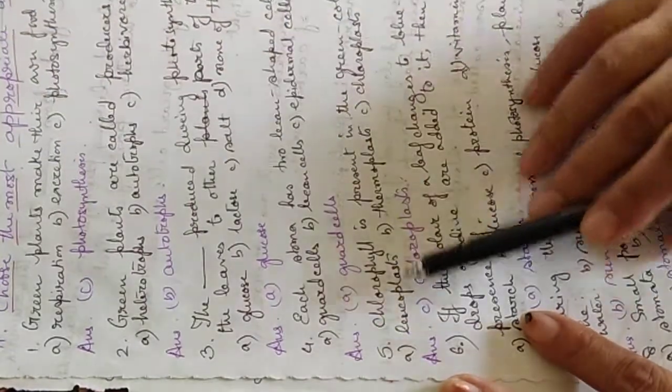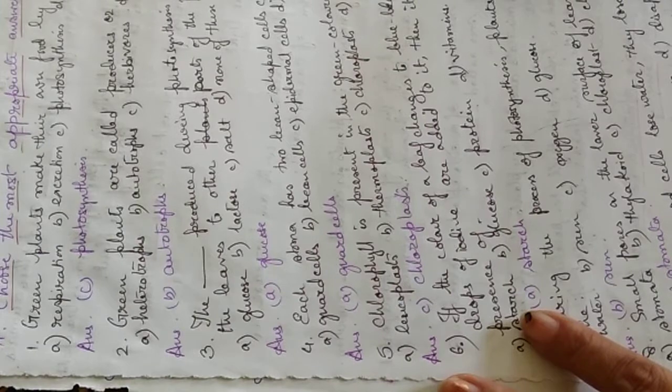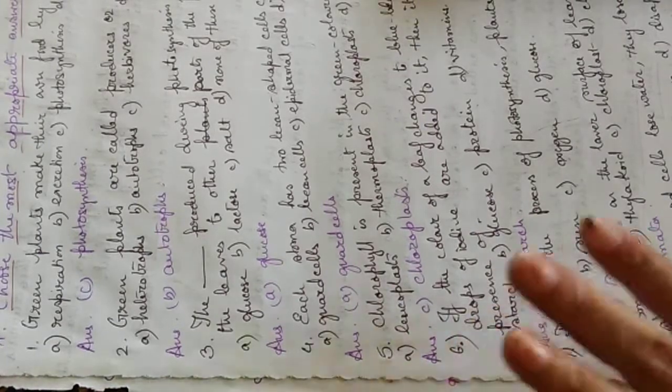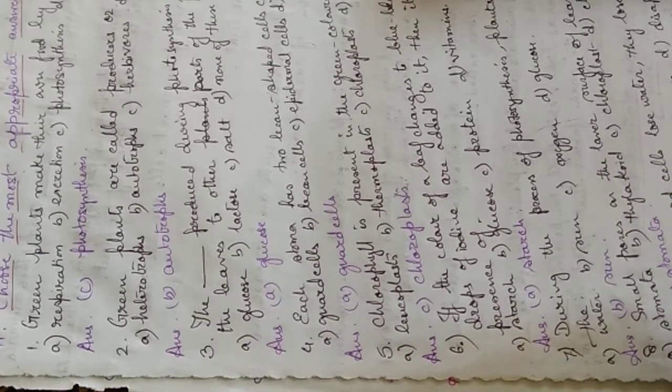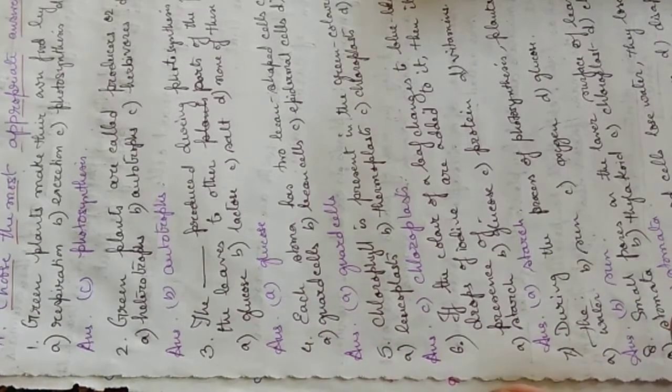Fifth question, chlorophyll is present in the green colored plastids called - the options are leucoplast, chromoplast, chloroplast, and none of these. Answer is chloroplast.